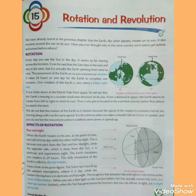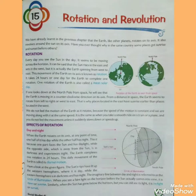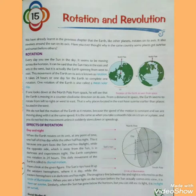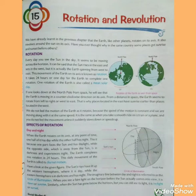This movement of the Earth on its axis is known as rotation. Viewed from the North Pole in space, the Earth is moving in a counterclockwise direction. From the South Pole, it appears to move in a clockwise direction. From a distance in space, the Earth seems to rotate from left to right, west to east. That is why places located in the east have sunrise earlier than places located in the west.